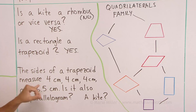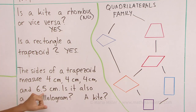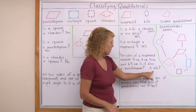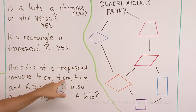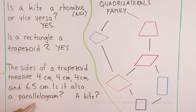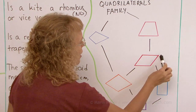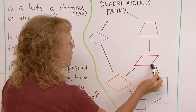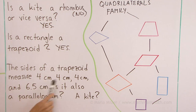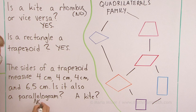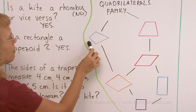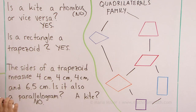The sides of a trapezoid measure 4 cm, 4 cm, 4 cm, and 6.5 cm. Is it also a parallelogram? A kite? We're given the side lengths — 4, 4, 4, and one longer at 6.5 cm. Is it a parallelogram? In a parallelogram, opposite sides are congruent. With 4, 4, 4, and 6.5 it would not work — you would have 4 and 4, and then the other pair would both have to be 6.5. So it cannot be a parallelogram. Is it a kite? In a kite I would need two pairs of congruent sides — like 4, 4 and 6.5, 6.5. These side lengths don't work for a kite either.